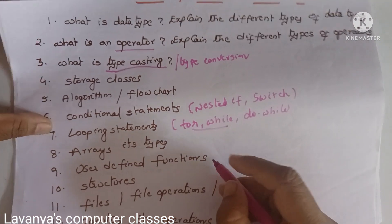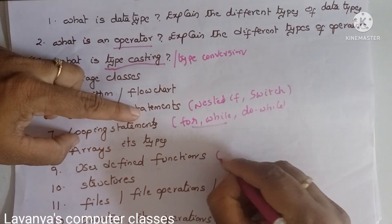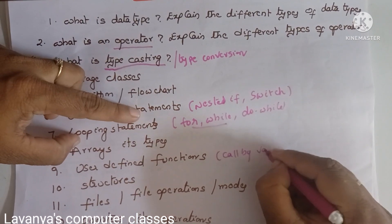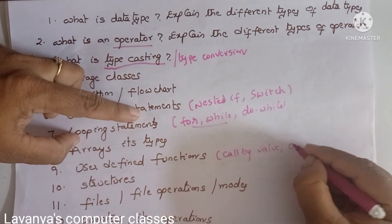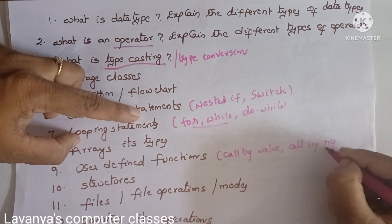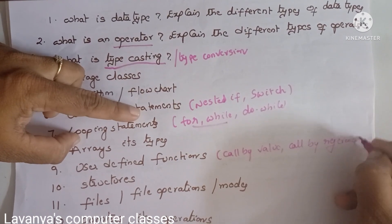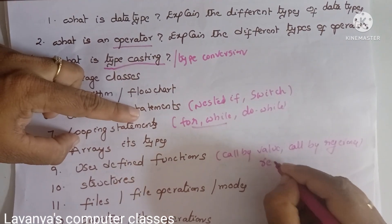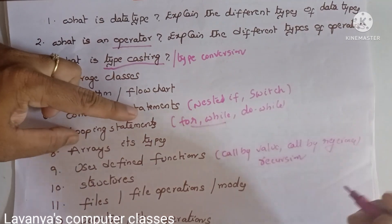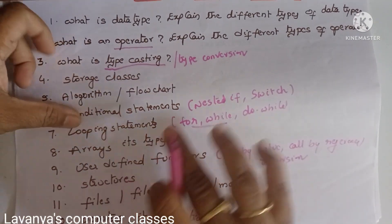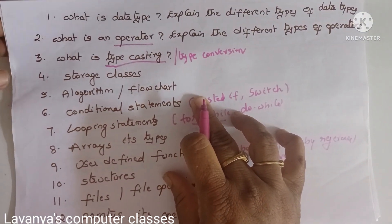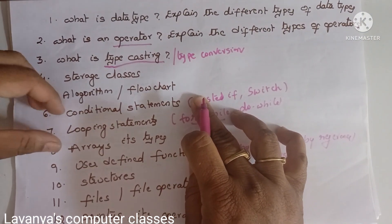Next are functions: learn call by value and call by reference. Recursion is also very very important.